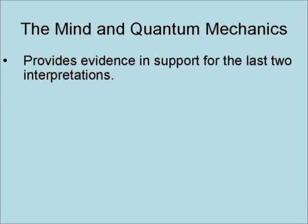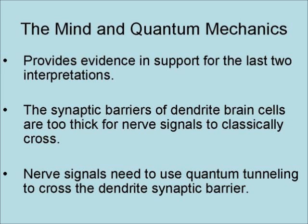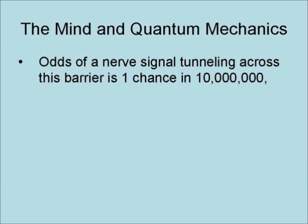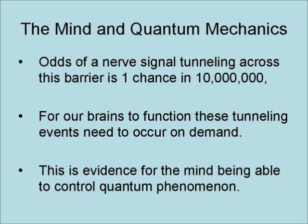The reason for bringing up this issue here is that the relationship of the mind to quantum mechanics provides evidence and support for the last two interpretations. It turns out that the synaptic barriers of dendrite brain cells are too thick for nerve signals to classically cross. As a result, nerve signals need to use quantum tunneling to cross the dendrite synaptic barrier. However, the odds of a nerve signal tunneling across this barrier is one chance in ten million. Yet for our brains to function, these tunneling events need to occur on demand. As a result, this is evidence for the mind being able to control quantum phenomena, and evidence against the naturalistic model of the mind as well.